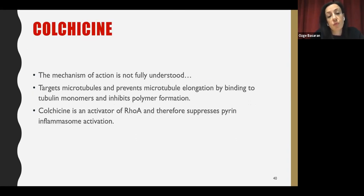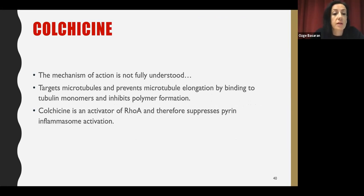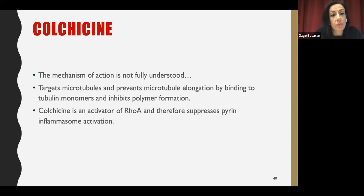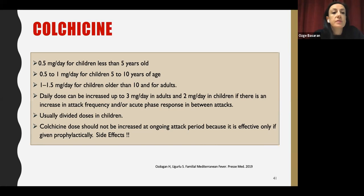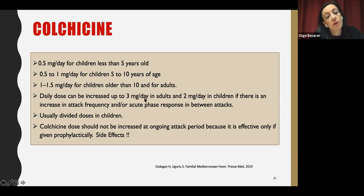The mechanism of action is not fully understood. Colchicine targets microtubules and prevents their elongation by binding to tubulin monomers, inhibiting polymer formation. Colchicine is also an activator of RhoA and therefore suppresses pyrin inflammasome activation. In children, colchicine doses are started according to age; the daily dose in adults can be increased up to 3 mg/day, but in children we usually do not exceed 2 mg/day.